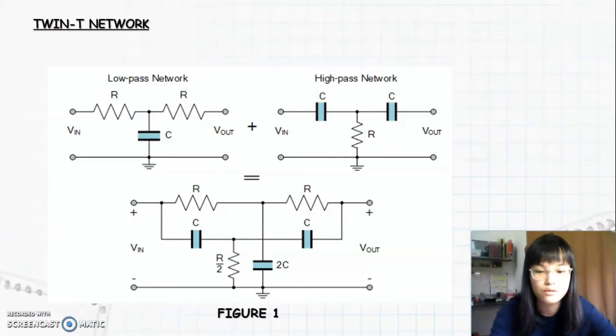This is a twin-T network. In figure one we can see the low-pass network and this is the high-pass network. So when the low-pass network is combined with the high-pass network, we will form a twin-T network.